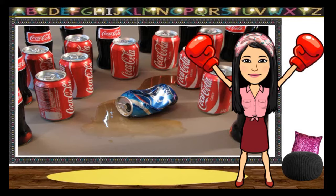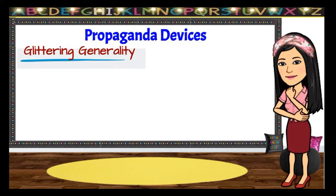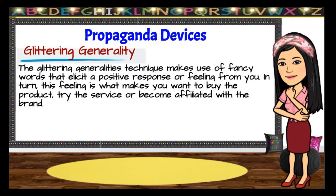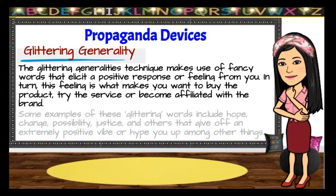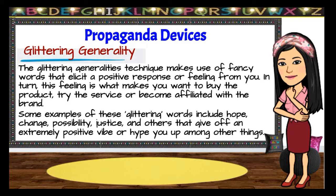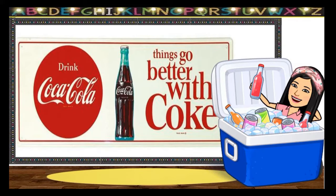The next propaganda device is glittering generality. Under this technique, the propagandist uses some attractive or impressive words or ideas which mislead the people or make them want to buy the product, try the service, or become affiliated with the brand. Some examples of these glittering words include hope, change, possibility, justice, and others that give off an extremely positive vibe. Let us take a look at this example. The use of the word 'better' in this ad triggers a positive reaction. We are always looking for ways to make things better, make experiences better, and that is what this ad promises.